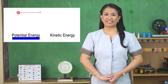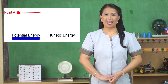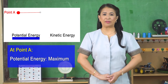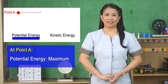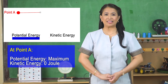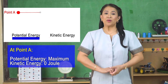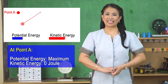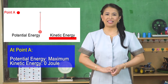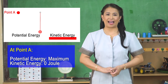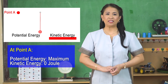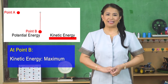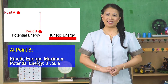A pendulum is held at point A. At this point, the potential energy of the pendulum is maximum because of its height, while the kinetic energy is zero since it is held at rest. When it is released, the potential energy from point A to point B decreases because of a decrease in height, while the kinetic energy increases due to the pendulum's movement. At point B, the kinetic energy is maximum while the potential energy is minimum.